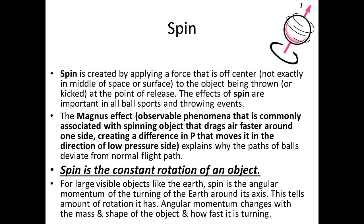Spin is the constant rotation of an object. For large visible objects like the Earth, spin is the angular momentum of the Earth turning around its axis, which tells the amount of rotation it has. Angular momentum changes with the mass, shape of the object, and how fast it is turning. A good example is ice skaters who spin and dance — these are all examples of spin.